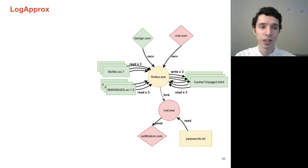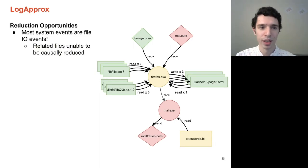And now we can begin to look for reduction opportunities. It's important to note that for the majority of audit logs, most of these system events are actually file IO operations. Therefore, if we have a reduction method that can target these IO operations, we can significantly reduce the audit log as a whole.